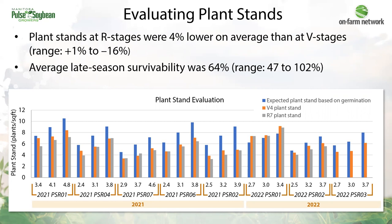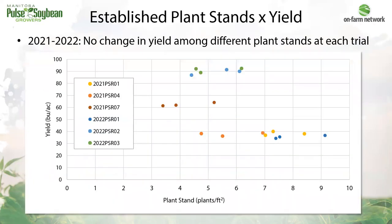Before getting into yield results, the two trials that were unable to be harvested were PSR-06 and PSR-02 in 2021, which were lost. Looking at the seven trials we were able to harvest — established plant stands versus yield — each set of colored dots is a different trial, with established plants per square foot versus yield on the side. Of those seven trials, we have not seen a significant yield response to seeding rate yet. Looking at each trial, there's really no increase in yield as plant stand changes — a lot of very flat lines.